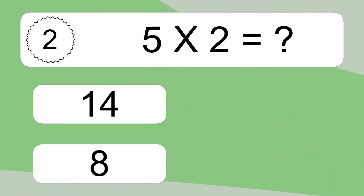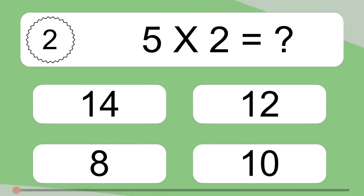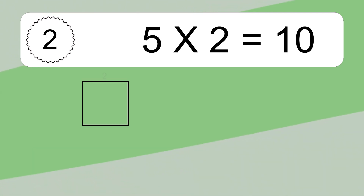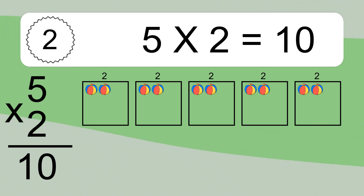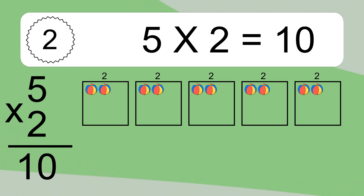5 times 2 equals what? 5 times 2 equals 10. We have 5 boxes, and each box has 2 colorful balls inside. If you count all the balls in all the boxes together, you will have 5 times 2 balls. This equals 10 balls.